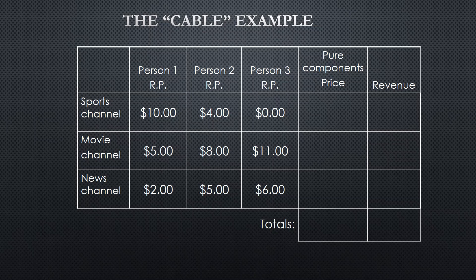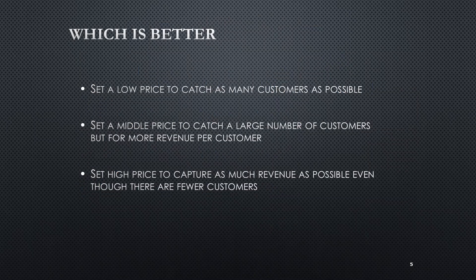For the second person, their value is higher for the movie channel, with a reservation price of $8. For the third person, it looks like they don't like sports at all — they're not willing to pay anything, with a reservation price of $0. However, they're willing to pay $11 for movies.